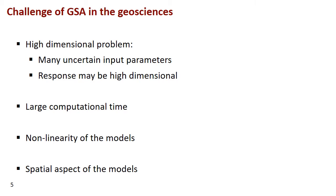There is non-linearity in the models. If the models were linear, the sensitivity analysis would be quite simple, but that's just not the case. This non-linearity adds to the complexity of the problem. Another very important aspect is the spatial nature of the problems: we're not dealing with just a few univariate parameters, but with spatially distributed parameters. This spatial uncertainty, often modeled in geostatistics, comes in as an important part of overall uncertainty. Towards the end of the presentation, we'll understand the impact of spatial uncertainty on sensitivity analysis and a simple way to quantify its effect.